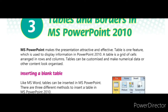What is a table? A table is nothing but the intersection of rows and columns — a grid of cells arranged in rows and columns. Tables can be customized to make numerical data or other content look organized.